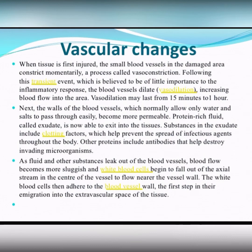So vasoconstriction, after that arterial hyperemia. Next, the walls of the blood vessels, which normally allow only water and salts to pass through easily, become more permeable. Protein-rich fluid called exudate is now able to exit into the tissues. Substances in the exudate include clotting factors, which help prevent the spread of infectious agents throughout the body. Other proteins include antibodies that help destroy invading microorganisms.